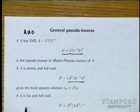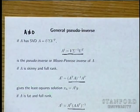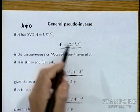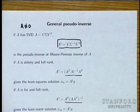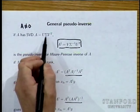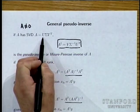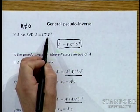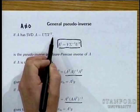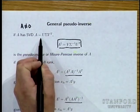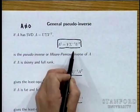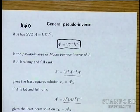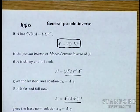The formula A† = V Σ⁻¹ U^T works for any non-zero matrix, while the earlier formulas only work for specific cases. Essentially, you switch the roles of the input and output directions and invert the gains along those directions.